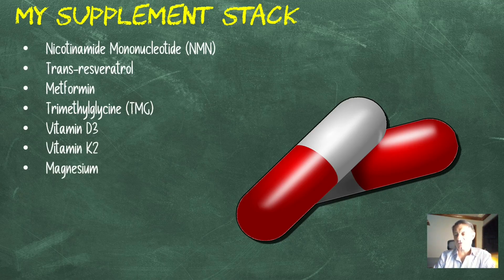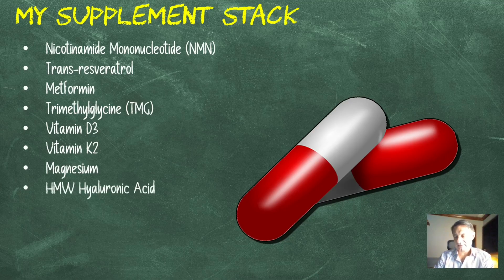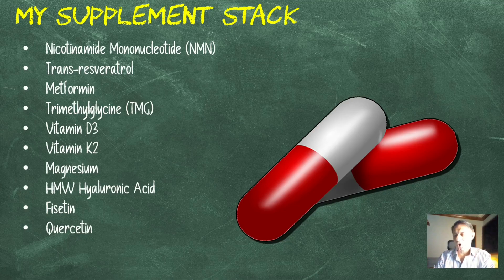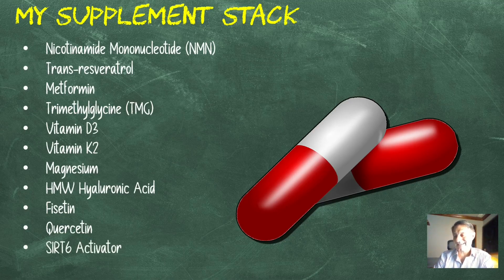Magnesium, 250 milligrams of the L-threonate version. High molecular weight hyaluronic acid, 400 milligrams a day. Fisetin, 2.4 grams a day on the first, second, and third of each month. Quercetin, 2.4 grams on the first, second, and third of each month. If you want to know why I use a periodic dosing protocol and not a maintenance daily one, there's a link in the description below. SIRT6 activator, 400 milligrams a day.